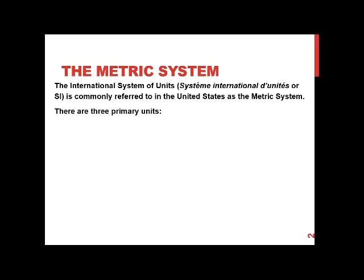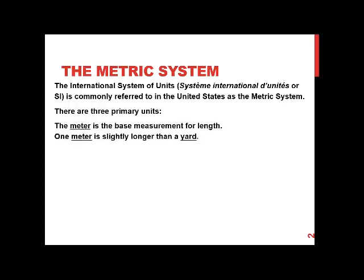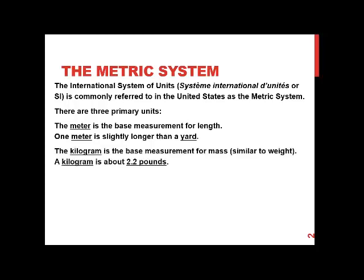In the metric system there are three primary units. The first is the unit of length, which is the meter — one meter is just a little bit longer than a yard. The kilogram is the base measurement for mass, which is similar to weight; a kilogram is about 2.2 pounds. The liter is used to measure volume; one liter is just a little bit more than a quart.